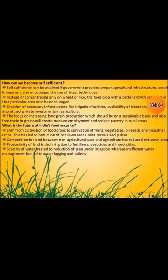How can we become self-sufficient? Self-sufficiency can be attained if the government provides proper agricultural infrastructure, credit linkage, and encourages the use of latest techniques. Instead of concentrating only on wheat or rice, food crops with better growth potential in particular areas must be encouraged. Creation of necessary infrastructure such as irrigation facilities and availability of electricity may also attract private investments in agriculture. Focus on increasing food grain production on a sustainable basis and free trade in grains will create massive employment and reduce poverty in rural areas.